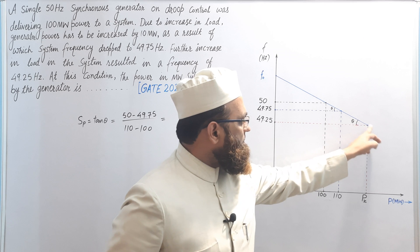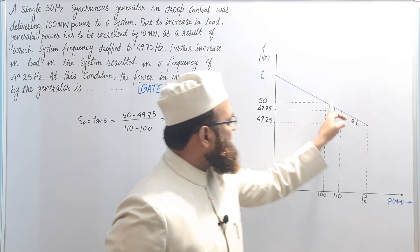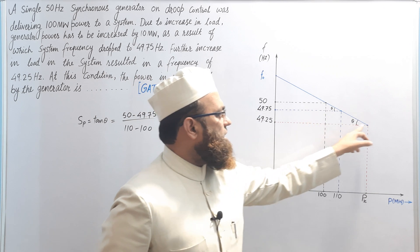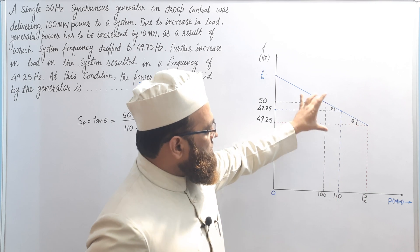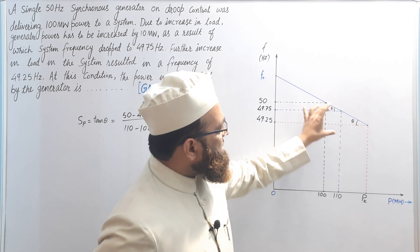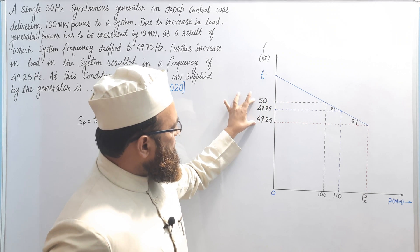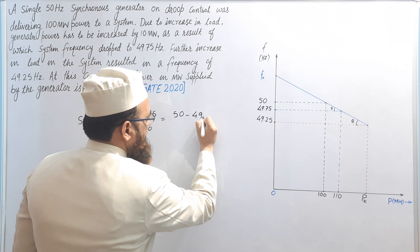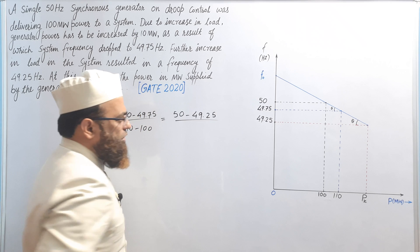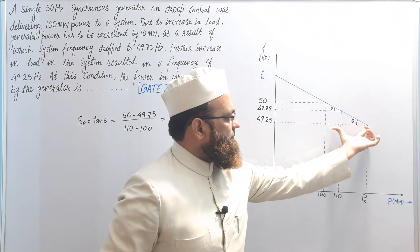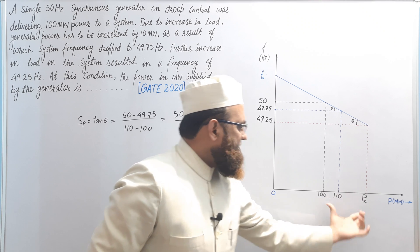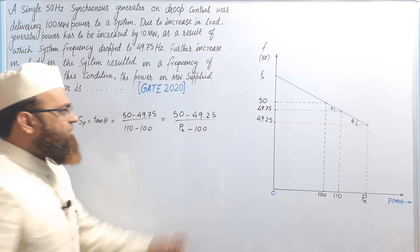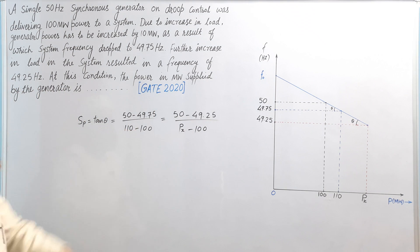The same tan θ may also be written from another right-angle triangle. For simplicity, let us take the bigger triangle. The perpendicular will be the difference of 50 and 49.25, and the base will be Px minus 100. So we write tan θ as (50 − 49.25) upon (Px − 100).